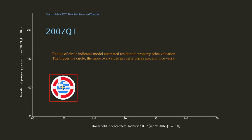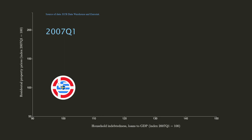The radius of a circle indicates estimated residential property price valuation. The bigger the circle, the more overvalued property prices are at a given point in time for a given country.